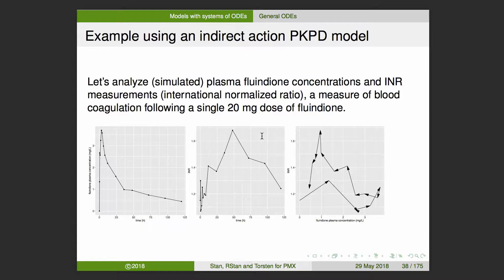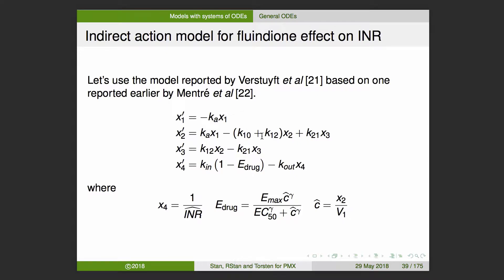Let's take another example: an indirect action PKPD model that can't be written in terms of the matrix exponential. I'm going to use simulated plasma warfarin concentrations and INR measurements — international normalized ratios as a measure of coagulation — following a 20 milligram dose of warfarin in a single individual. We've got plasma concentrations, INR values pushed off to the right compared to concentrations, and some hysteresis. Instead of an effect compartment model, we're going to describe this using an indirect action model.